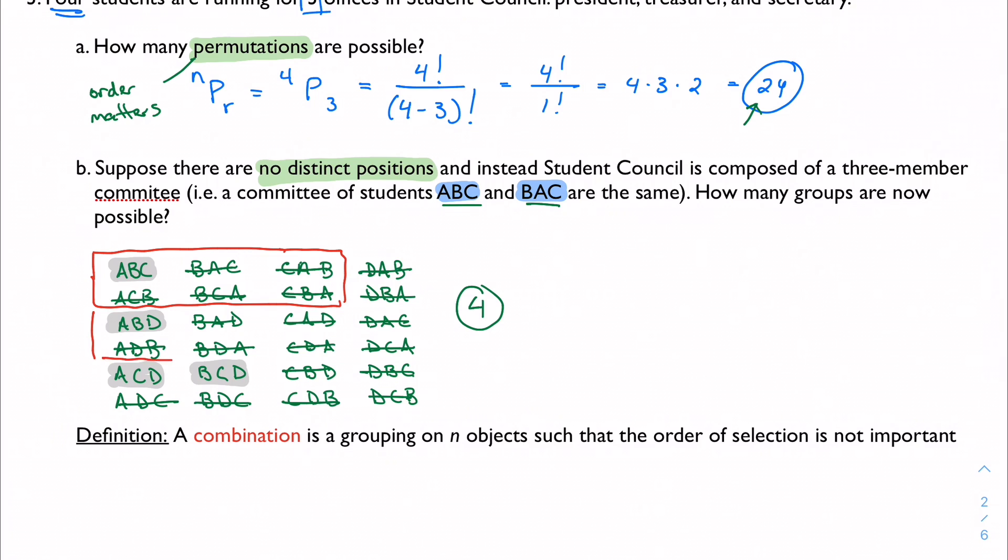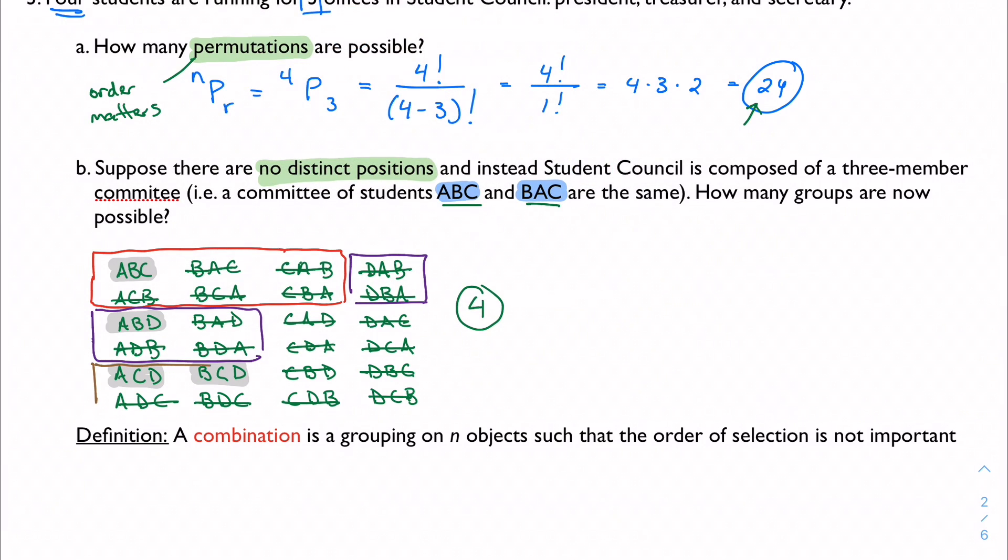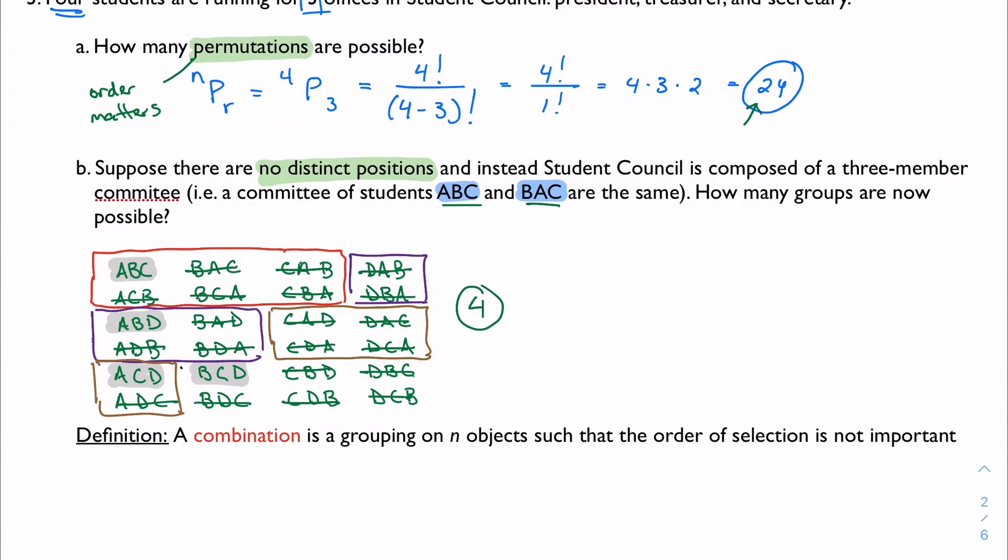Just making sure I can actually get all these right. A, B, D. I want to use different colors here. So here's a group of six. And in purple is going to be a group of six. And in brown is going to be a group of six. So here's the other group of six. And then in black is going to be another group of six.